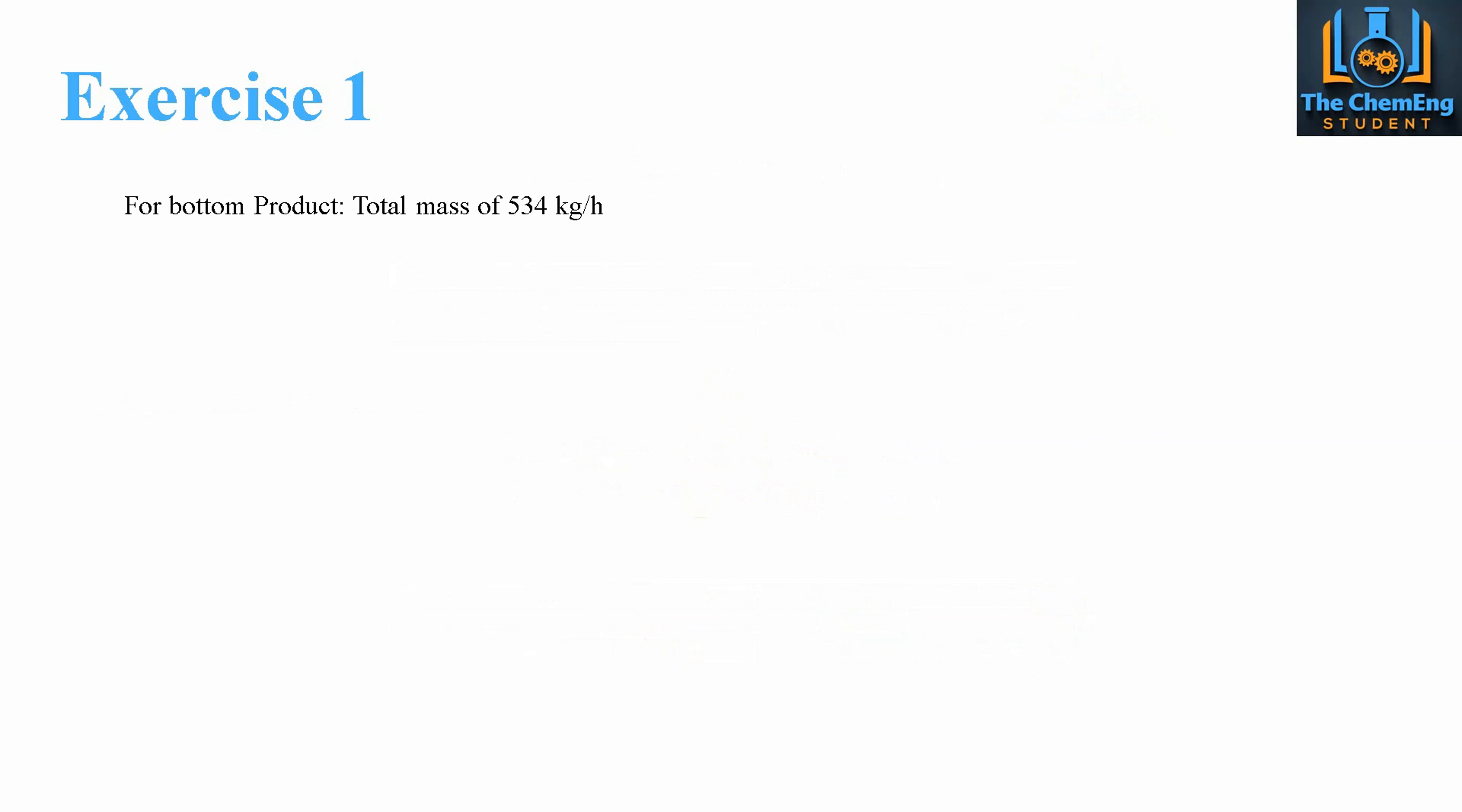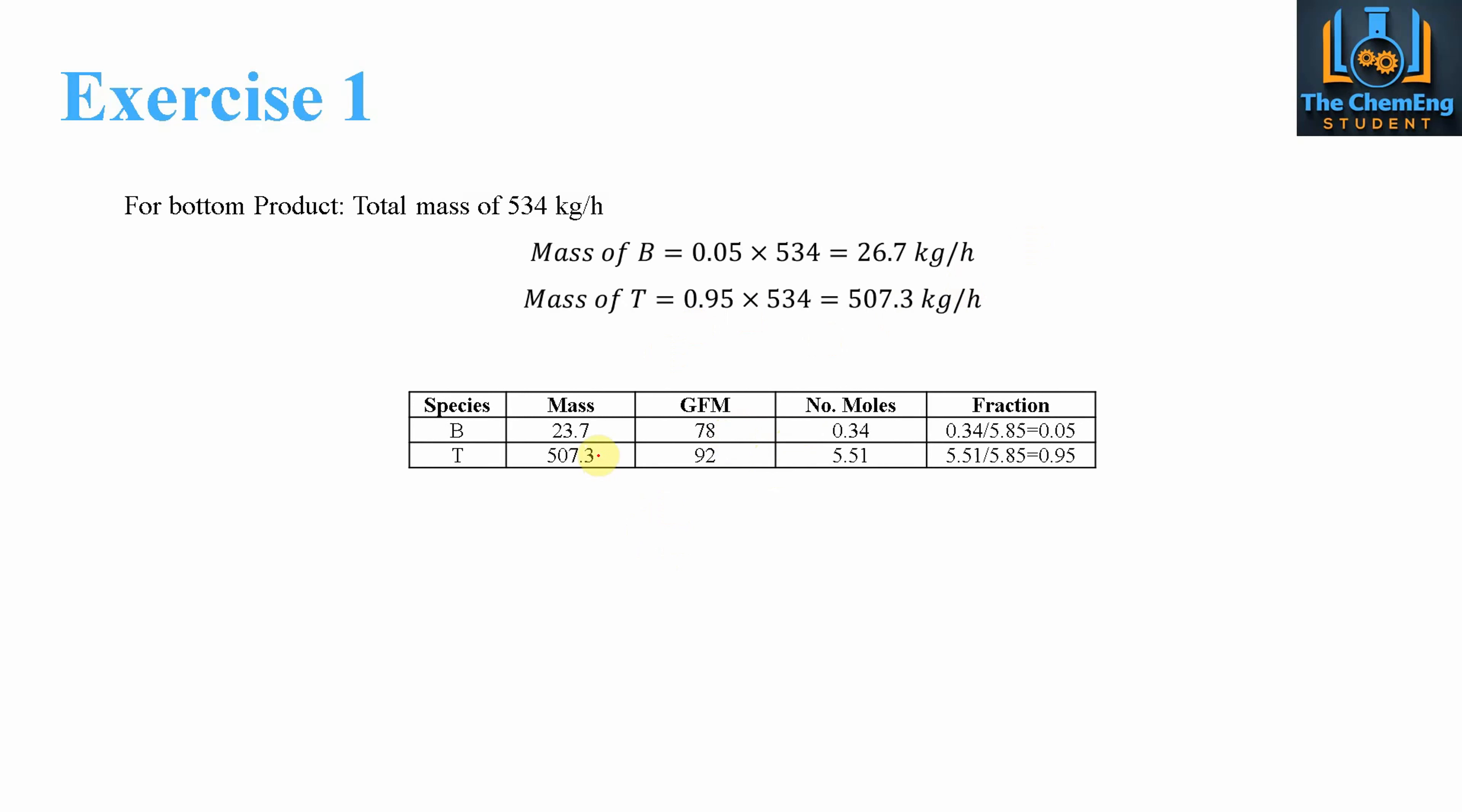Now for the bottom product, the total mass flow rate was 534 kilograms per hour. So we do the same thing, we multiply 0.05 and 0.95 for benzene and toluene respectively. So then when we substitute in our table, mass, GFM, moles again, we see that we get the exact values of 0.95 and 0.05. So that just proves that our mole fraction is weight per weight, what it said in the question.